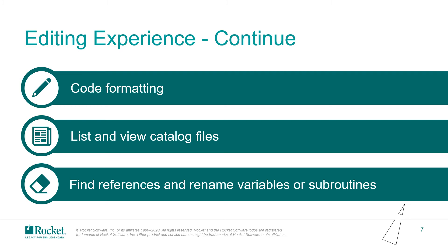Find reference and rename are also important features. Just like we mentioned before, a Basic file may refer to some fields in other accounts. For example, if I want to modify the parameters of a subroutine, the find reference feature could help list all references of this subroutine in all files. If I want to modify the name of a variable, the rename feature would ensure all places where the variable is referenced are updated, and comments and quoted strings would not be impacted.